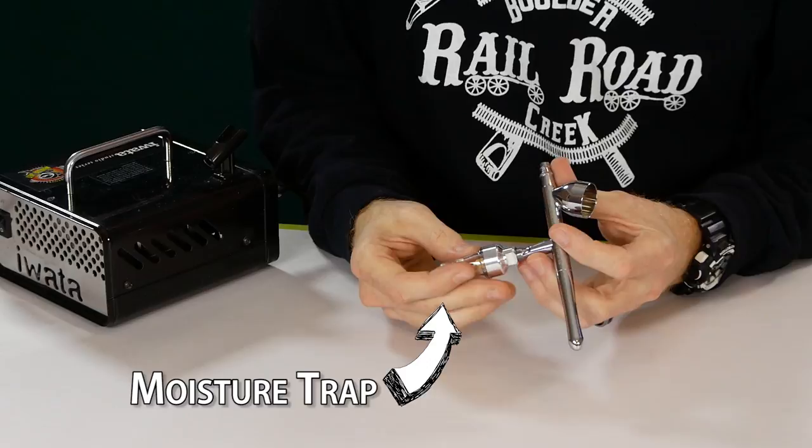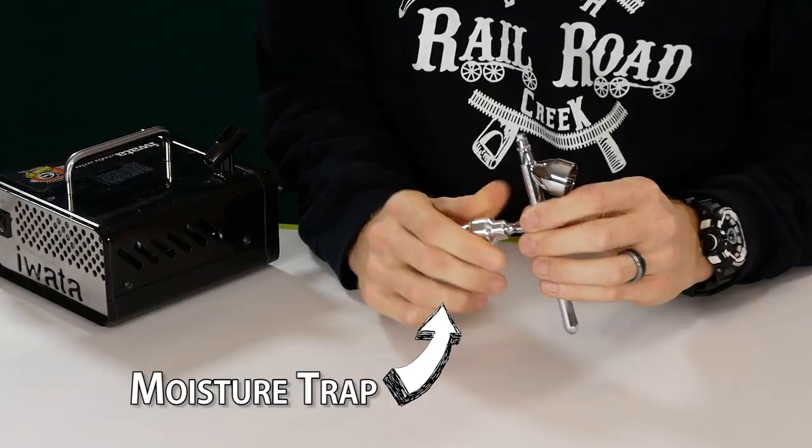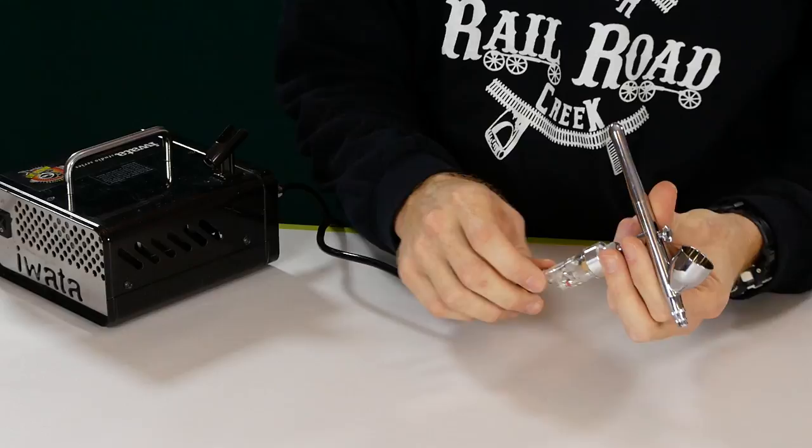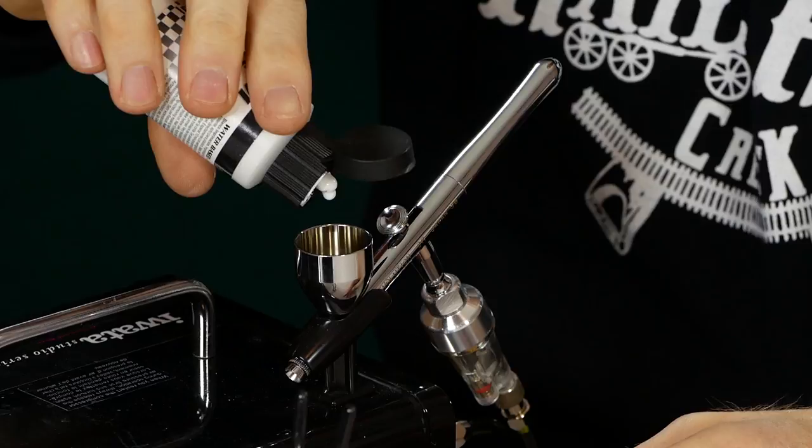It's important that when airbrushing that the air being passed through the airbrush is completely dry and free from moisture. One very easy way of ensuring this is to use a moisture trap like this one here. The thing I like about this particular moisture trap design is that it acts like a handle on the airbrush making it very comfortable to use.